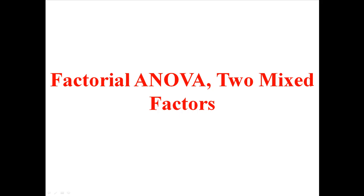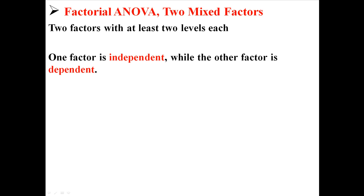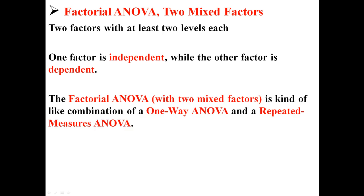Now that we've done the factorial ANOVA with two independent factors, it's going to get a little bit more complicated. Now we're going to do a factorial ANOVA with two mixed factors. In this ANOVA, there are two factors with at least two levels each. One of these factors is independent, while the other factor is dependent. The factorial ANOVA with two mixed factors is kind of like a combination of a one-way ANOVA and a repeated measures ANOVA, because you have one independent variable and one dependent variable.